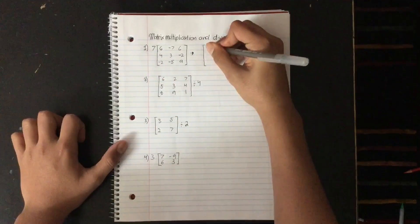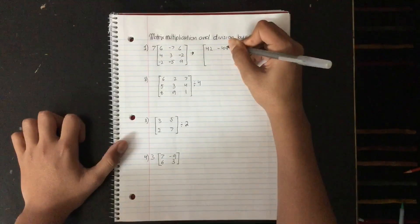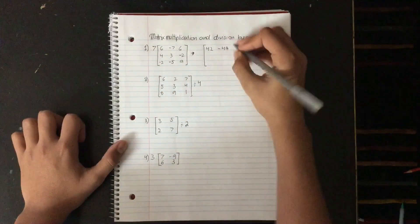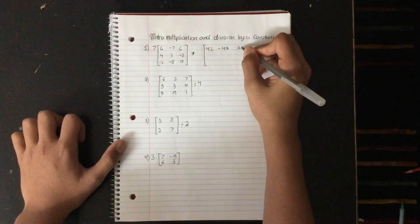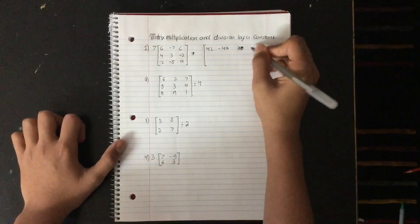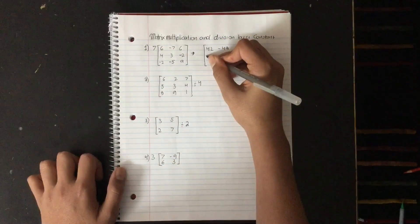and 7 times negative 7 is negative 49. 7 times 6 is 30, oops, it's 42, that was a little silly mistake there. 7 times 4 is 28,